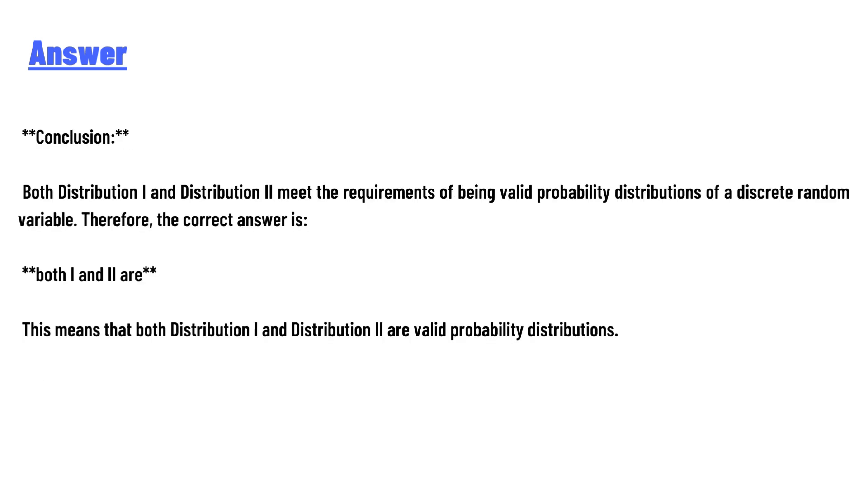As you can see, both Distribution I and Distribution II meet the criteria of being valid probability distributions of a discrete random variable. Therefore, the correct answer is: both I and II are. This means that both Distribution I and Distribution II are valid probability distributions.